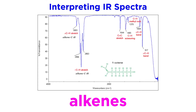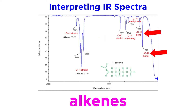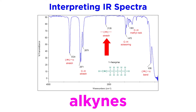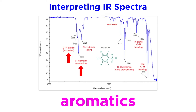For alkenes, we see stretches for the vinyl proton and the carbon-carbon double bond. There is also out-of-plane bending for the vinyl proton, which helps determine the substitution pattern. With alkynes, we get a stretch for the triple bond, and the intensity tells us whether this is terminal or internal. Then for aromatic compounds, we see aromatic CH stretching, and there is also data for the carbon-carbon bonds in the ring itself.